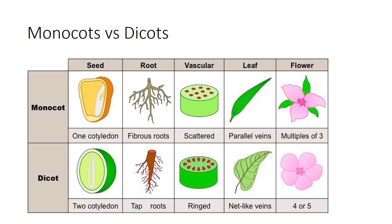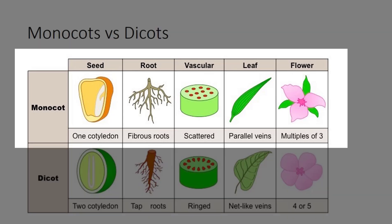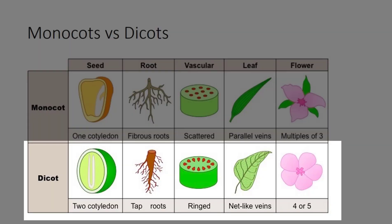You heard various differences between monocots and dicots. Here's a summary. Monocots have one cotyledon, leaf veins that are parallel, vascular bundles in their stem that are scattered, fibrous root systems, and flower parts in multiples of 3. Dicots have two cotyledons, veins that are net-like or reticulate, vascular bundles usually arranged in a ring, a taproot system, and flower parts in multiples of 4 or 5.